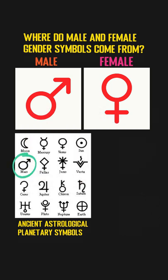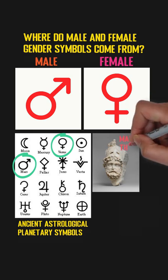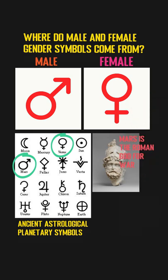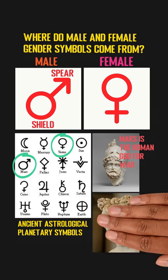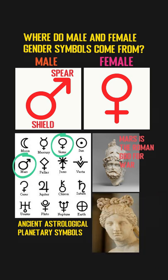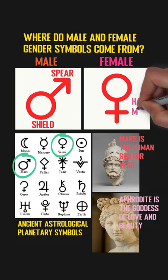All the planets in the solar system have their own icons, and among them the ones representing Mars and Venus are used as gender symbols. Mars is the Roman god of war, and the Mars symbol — which features the shield and spear of Mars — is associated with males. In comparison, Venus is the Roman equivalent of Aphrodite, and the female symbol represents the hand mirror of Aphrodite, the goddess of love and beauty.